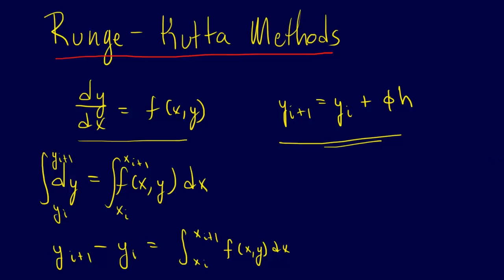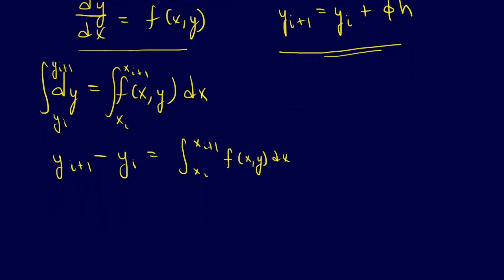We can move the y_i to the other side, so we get y_i+1 is equal to y_i plus the integral from x_i to x_i+1 of f of x,y dx.